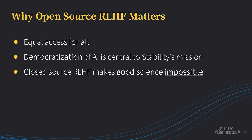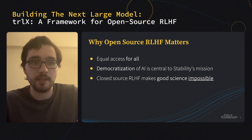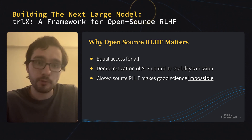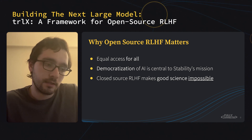So why does open source RLHF matter? There are many people who feel that equal access to this kind of potentially world-changing technology is crucial. Carpr AI is fortunate enough to be supported by Stability AI, who provides compute for us to train these RLHF models, and democratization of AI is central to Stability's mission. But perhaps most importantly, closed source RLHF makes good science fundamentally impossible. If researchers don't have access to the underlying model weights or data, then we really have no idea how these models were trained, and it is hard to draw meaningful comparisons or study them in any rigorous way.